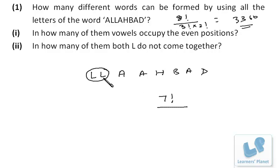Divided by - now this I have considered as 1, so I will not bother about 2 L's being there because we've already considered them as 1. Now we have A appearing 1, 2, 3 times, so I will divide by 3 factorial. These are the number of ways when both L's are together.